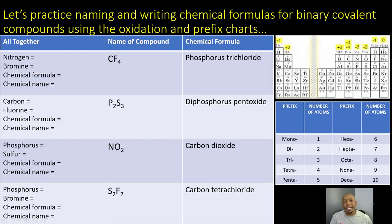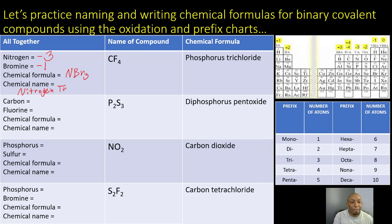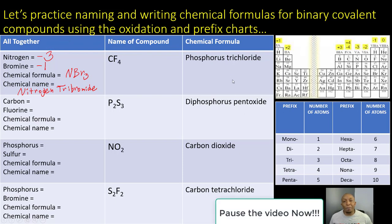Let's practice naming and writing chemical formulas for binary covalent compounds using the oxidation and prefix charts. For the first example: nitrogen has a negative 3 charge and bromine has a negative 1 charge. Crossing the charges gives us NBr3, so the chemical name is nitrogen tribromide. Take five minutes to complete the remaining problems and write the compound names and chemical formulas. Pause the video now.